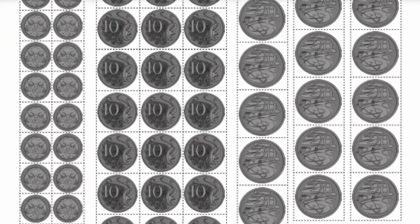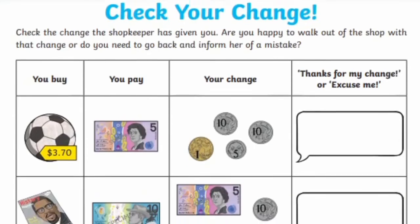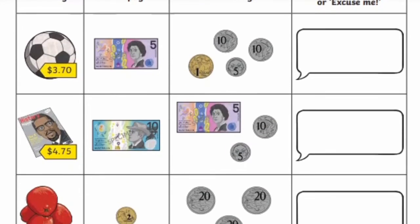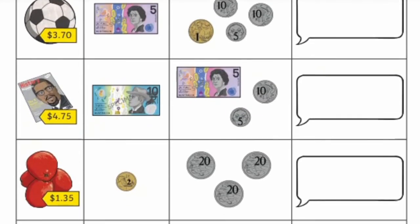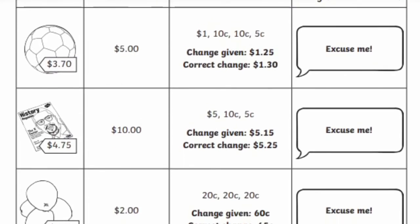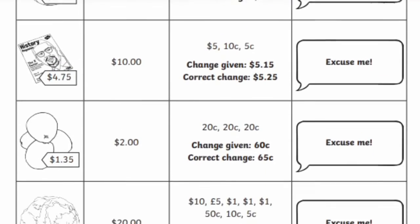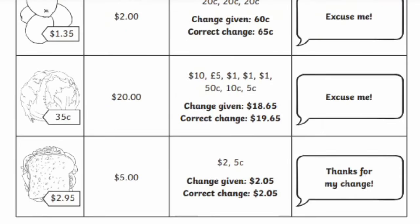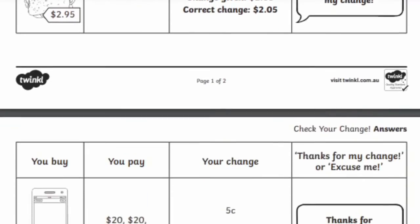This next activity is called 'Check Your Change.' Children will look at the information they've been given, including what they're buying and how much it costs, how much money they hand over, and how much they receive back. Their job is to identify whether this is the correct amount or not. If it is, they write 'thank you for my change' and exit the shop. If it isn't, they say 'excuse me,' and if it's too much they can decide what's appropriate to say to the shopkeeper.